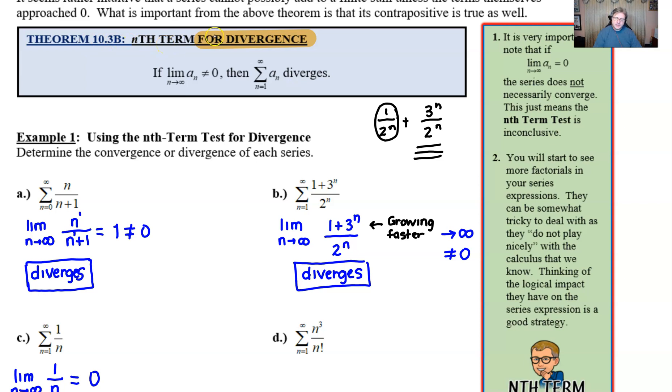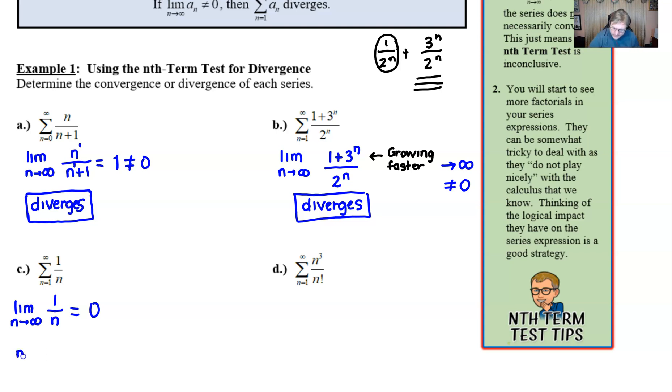This is called the nth term test for divergence. For divergence. It only will tell you if the series diverges. So what do we say? We say the nth term test is inconclusive. Or you could say can't tell with the nth term test. Now, if you are watching this video after you've gone through a few more of the topics in unit 10, you know darn well what this does. You're probably thinking, by golly, that is the divergent harmonic series. This does diverge. But it doesn't diverge because of the nth term test. We're going to need another test later on. We'll talk about that. But for right now, for what we know, this is your best answer. It's a true statement.